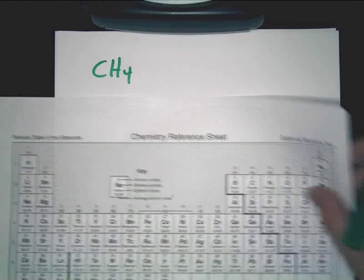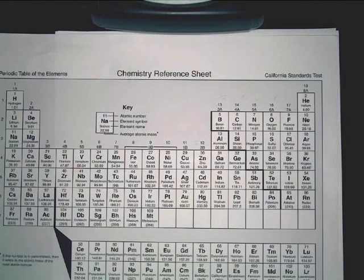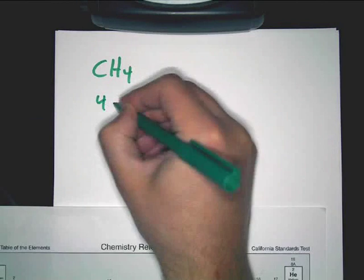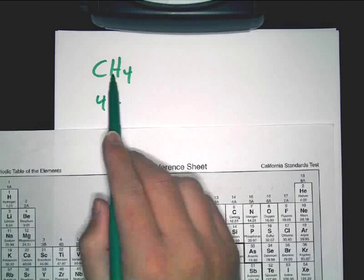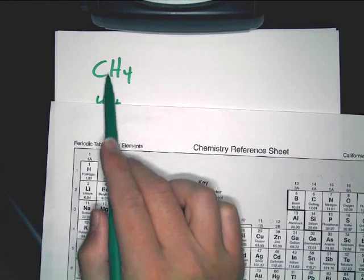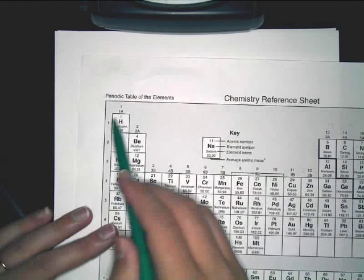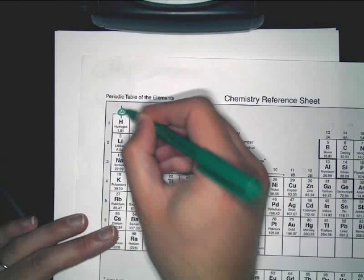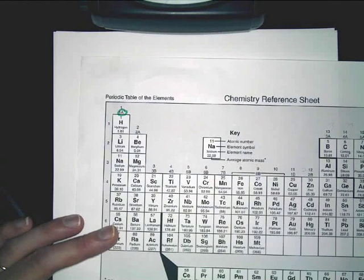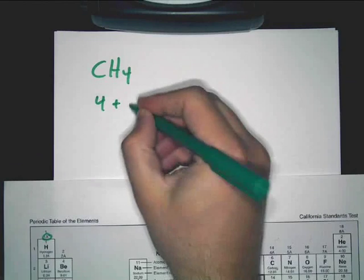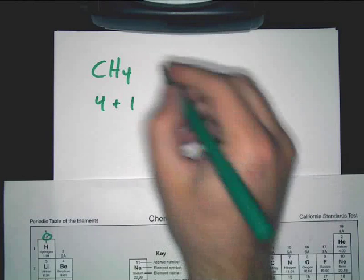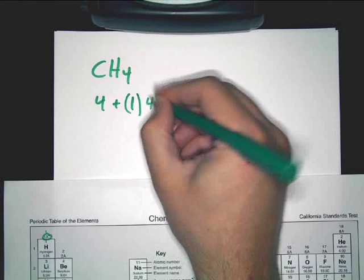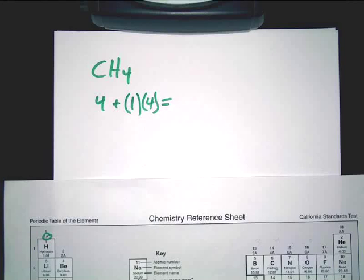So how many valence electrons does carbon have? It's got four. So four plus how many does each hydrogen have? Remember how this little 1a indicates the valence? Hydrogen has one. How many hydrogens do we have? You've got four, so one times four. So what's our total valence? Eight.